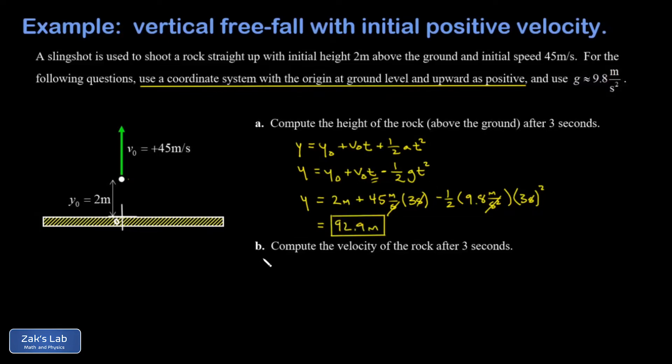In part b we're looking at the same moment in time, three seconds after the launch, but this time I want to compute the velocity. So we use our kinematics equation v equals v naught plus a t, and we plug in what the acceleration is for this vertical freefall which is negative g.